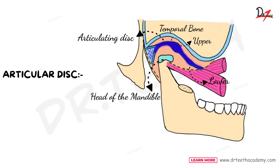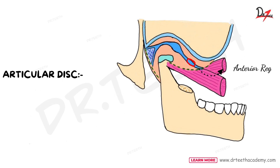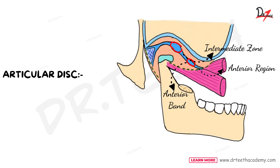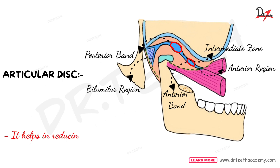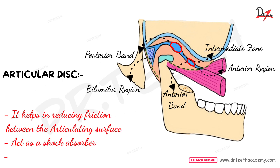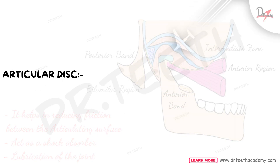If you look at this disc closely, it has a concave or convex superior surface and a concave inferior surface. At the periphery, the disc is attached to the fibrous capsule. The disc can be divided into various regions: the anterior region, anterior thick band, intermediate region, posterior thick band, and bi-laminar region. The bi-laminar region contains venous plexuses. The function of this disc is to reduce friction, act as a shock absorber, and help in lubrication of the joint.